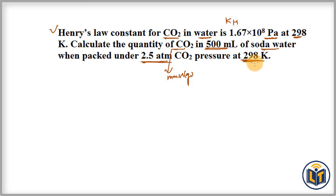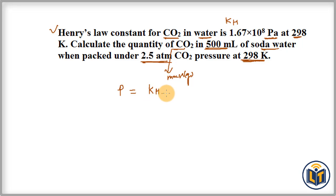Henry's law states that at constant temperature, the vapor pressure of a component in a solution is directly proportional to the mole fraction of the solute. The formula is: P = KH × x, where P is the pressure, KH is Henry's constant, and x is the mole fraction of the solute.